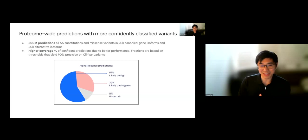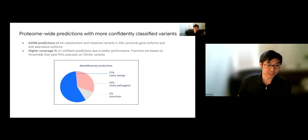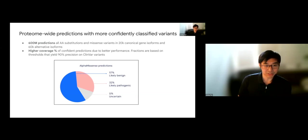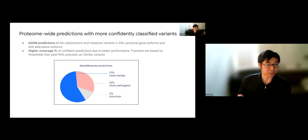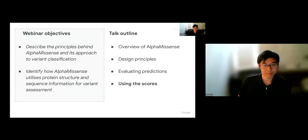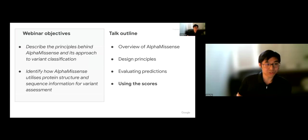After all benchmarking was complete and confidence in the model was established, 600 million predictions of different missense variants and their pathogenicities were generated. This set covers all amino acid substitutions in 20,000 canonical gene isoforms as well as 60,000 alternative isoforms, including splice isoforms. This increased coverage of confident predictions due to the better performance of AlphaMissense relative to other models, filling in the knowledge gap across the proteome.